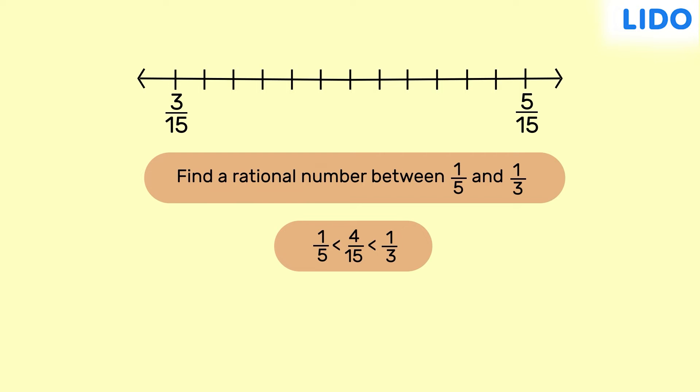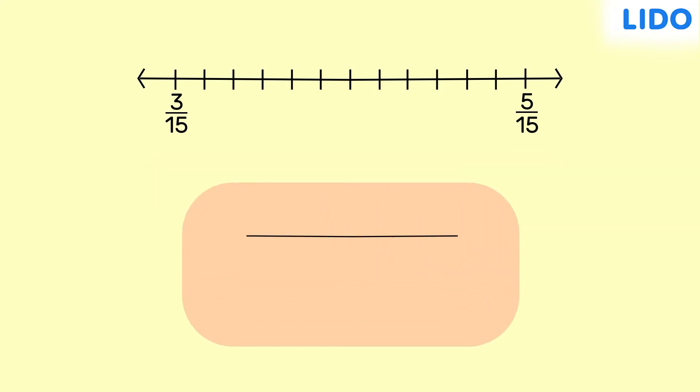Now, let's say we want to find 3 rational numbers between 1 by 5 and 1 by 3. How will we do this exactly when there is only one integer between 3 and 5? Remember, that in order to find n integers between any two integers, the difference between them has to be at least n plus 1. So, if we want to find 3 integers between any two integers, then the difference between those two integers should be at least 4.